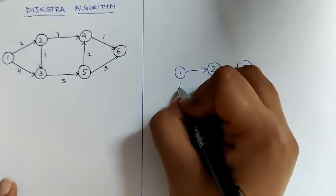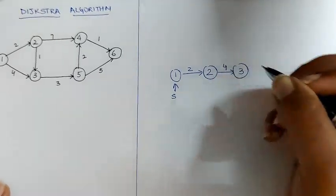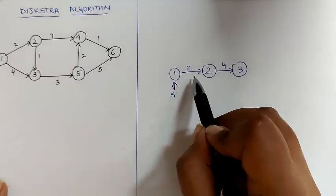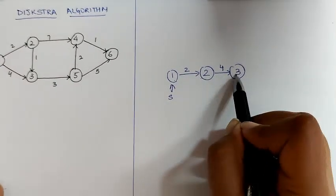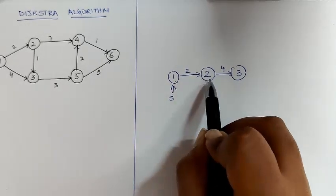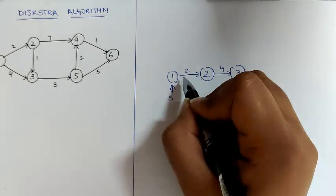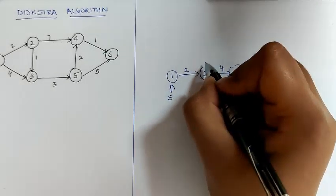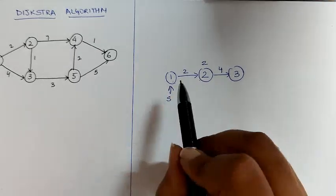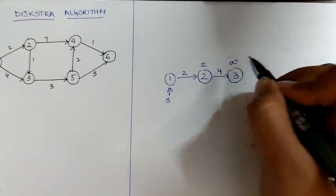Here, our source vertex is S and we have to find the shortest path from 1 to 2 and 1 to 3. The distance from 1 to 2 is 2 and it is a direct path. So the cost of 2 is 2 and there is no direct path from 1 to 3. Hence, the distance for now is infinity.